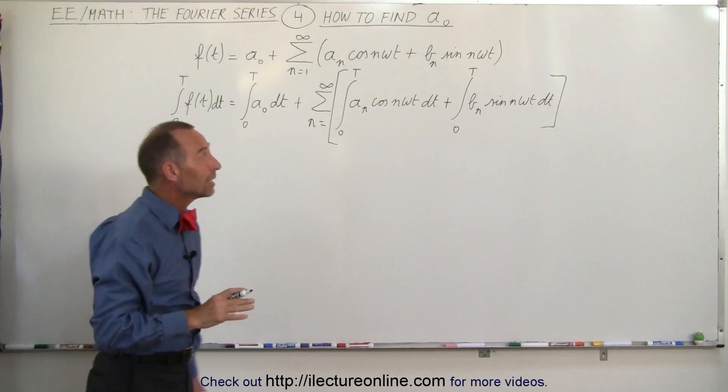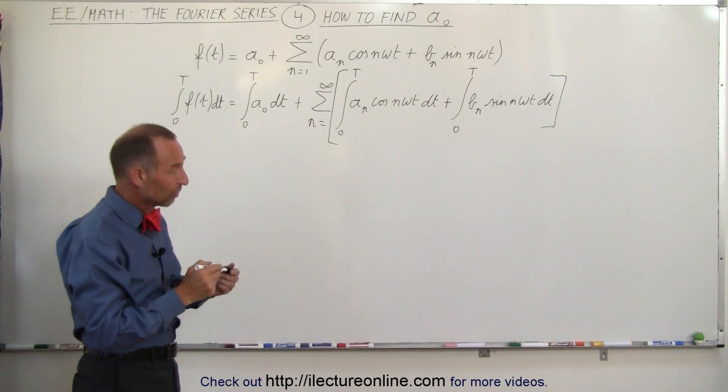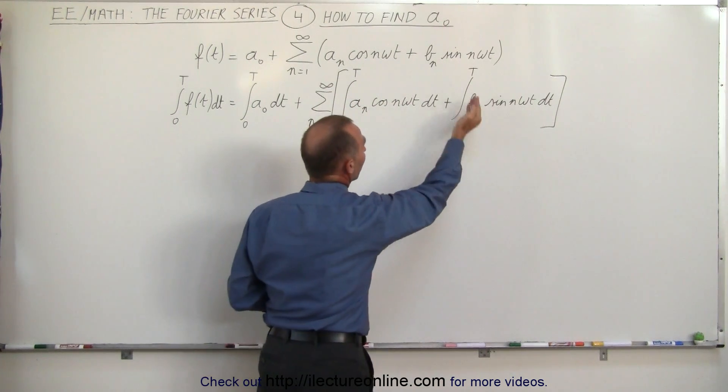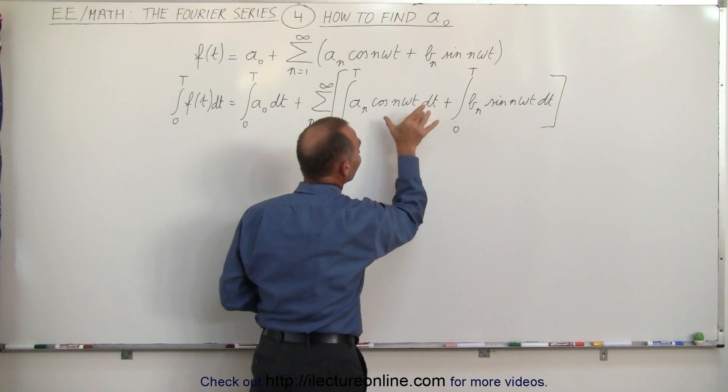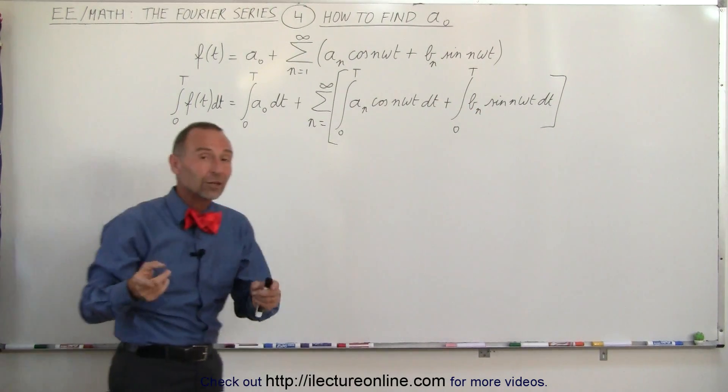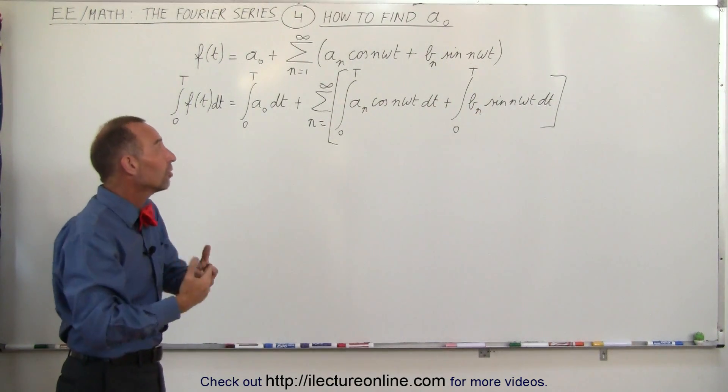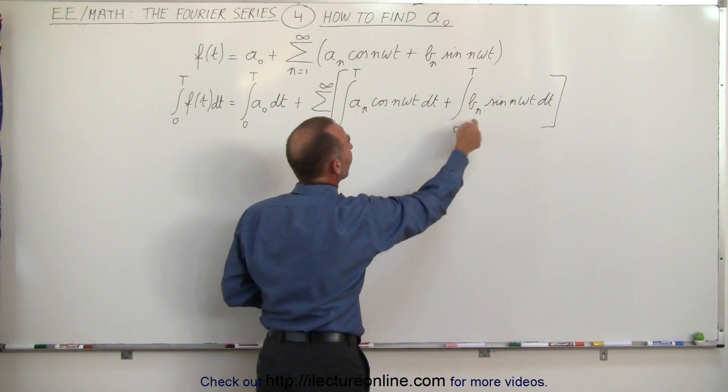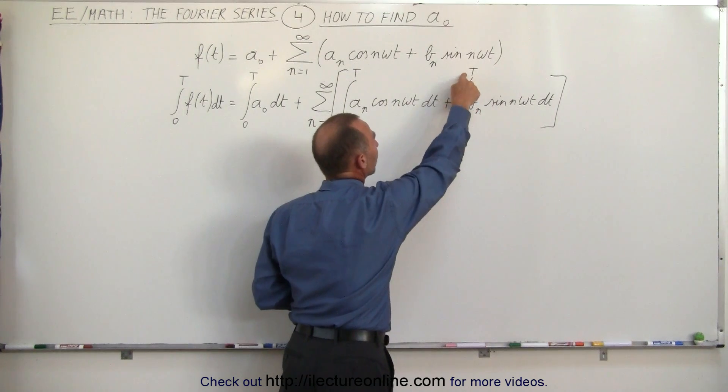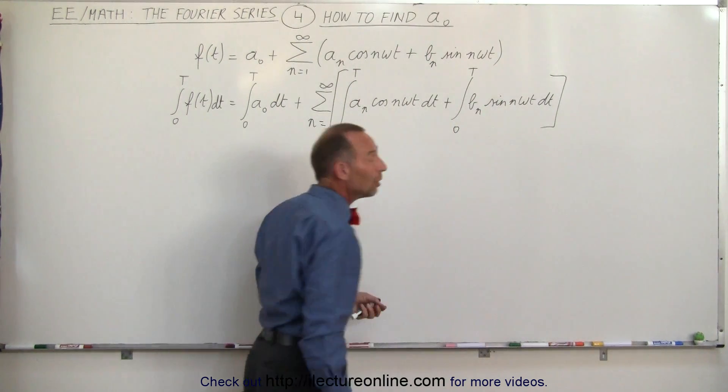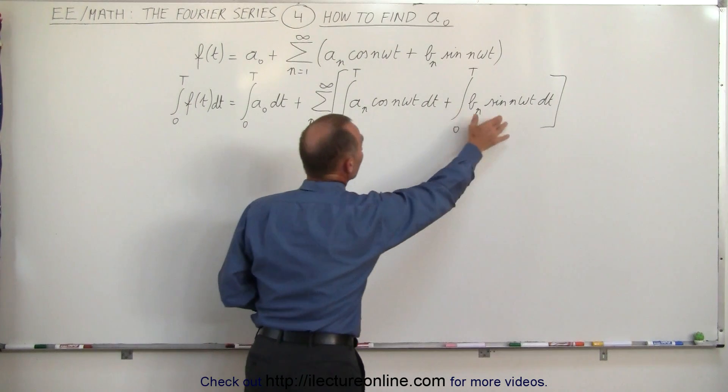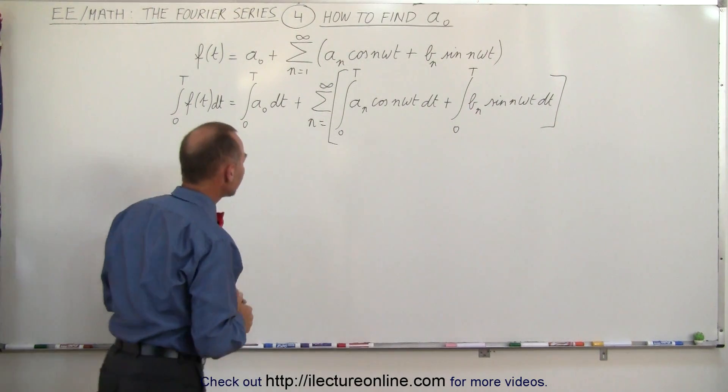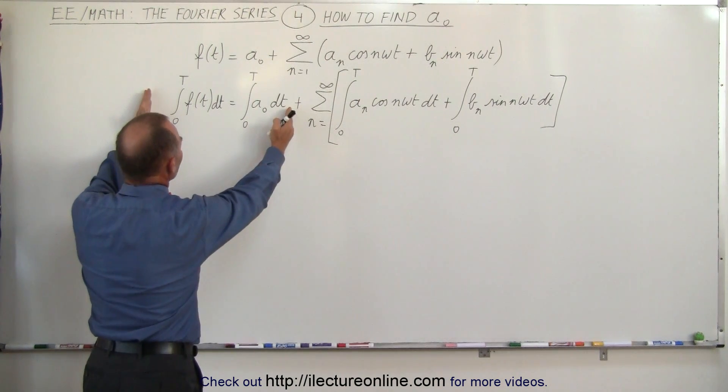Now you're going to be glad that we did the previous video, because if you look, we can take a sub-naught outside the integral and b sub-n outside the integral, and what's left is exactly the same as the first two integrals we had on the previous video. That told us that if we integrate from 0 to the period of the cosine of n omega t, or integrate from 0 to the period of the sine of n omega t, we get 0. So the integral of these two integrals is equal to 0.